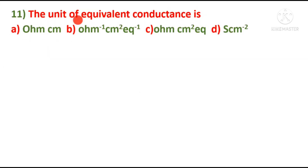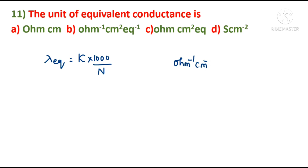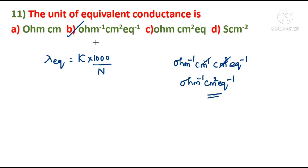The last question: what is the unit of equivalent conductance? Equivalent conductance = κ × 1000 / n. κ has units of ohm⁻¹ cm⁻¹, the 1000 contributes cm³, dividing by equivalents gives ohm⁻¹ cm² equiv⁻¹. Units are very important in physical chemistry. Hope you understood all the MCQs clearly. We shall meet with an interesting topic in the next session. This is Anita Raj, your chemistry mentor, signing off. Thanks for watching.